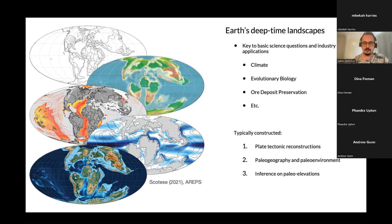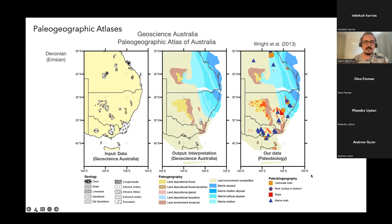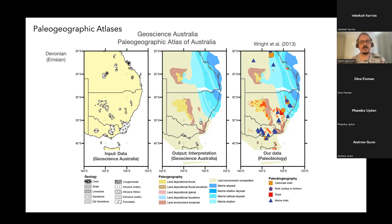Here is an example of paleogeographic maps. I use the Geoscience Australia Paleogeographic Atlas of Australia as an example — to me it's the gold standard in the way it's implemented. It provides the data input, here for the Devonian at about 400 million years ago, and then the interpretation, showing where there's extrapolation. You can see where there are constraints, where more data is needed, and you can add fossil marine occurrences to refine the inundated shelf extent.